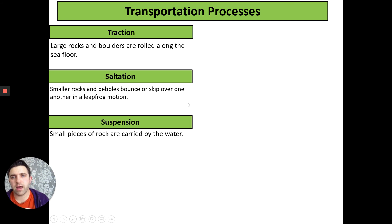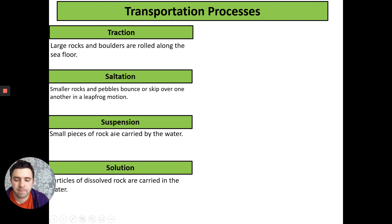Suspension is where particles have been eroded by attrition. They've broken off of our larger, more angular rocks. These are carried by the water, just held up and carried. This is always our fine, very small pieces of rock, which are easy enough for the water to lift. And then solution. This is what happens after our corrosion takes place. This is where particles of dissolved rock are carried in the water.